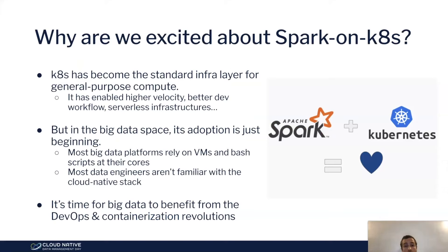Before diving into the topic, why are we excited about Spark on Kubernetes? Kubernetes has become the standard infrastructure layer for general-purpose compute, bringing higher velocity for teams, better development workflows, serverless infrastructures, more flexibility, cost-effectiveness, and cloud-agnosticism. But in the big data space, adoption of Kubernetes has just begun. Most big data teams still rely on VMs and bash scripts, and are not familiar with the cloud-native stack. Spark on Kubernetes became available a couple of years ago, and it really feels like it's time for big data to benefit from the DevOps and containerization revolutions, rather than stand apart on an island with outdated tools.